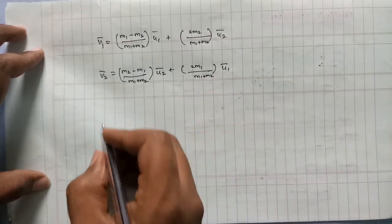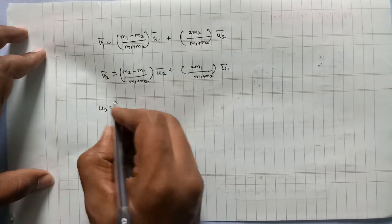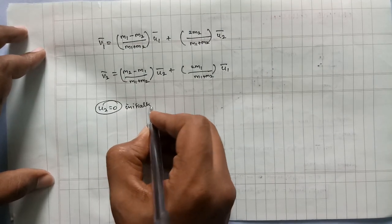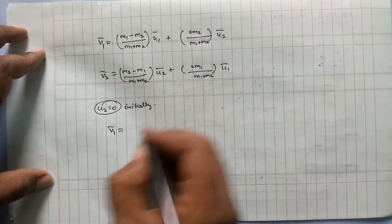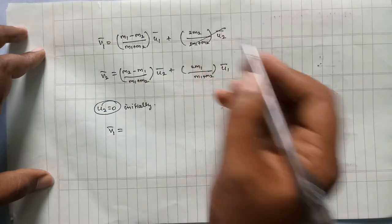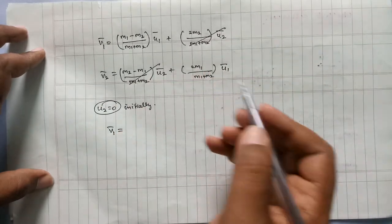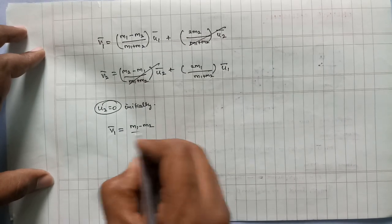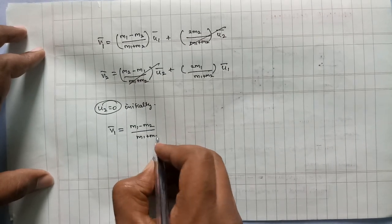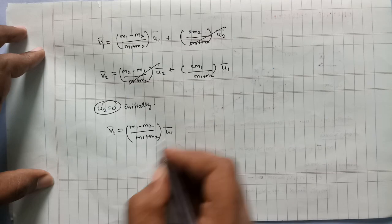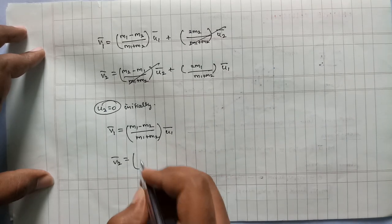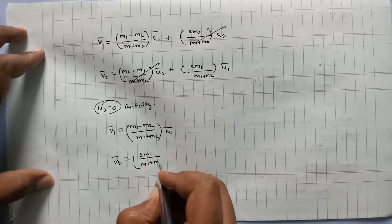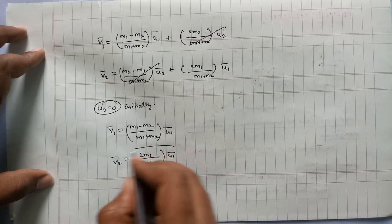Now, for the second object, the initial velocity U2 is zero. So V1 simplifies, and U2 equals zero. The remaining expression gives V2 equal to 2M1 by M1 plus M2, multiplied by U1.